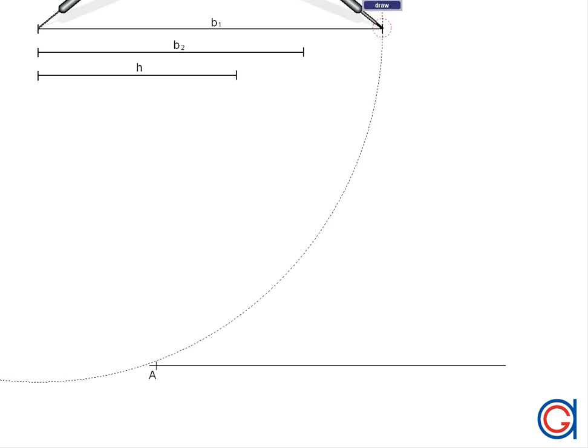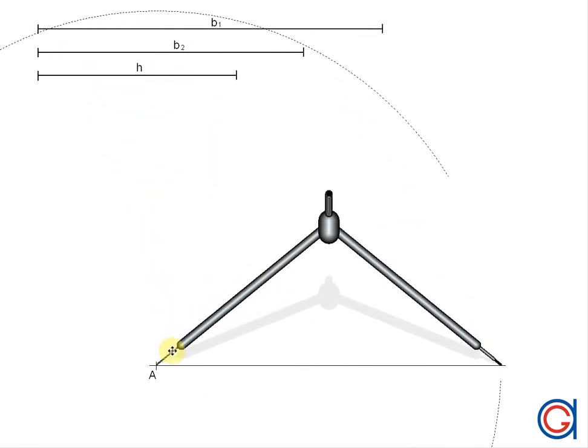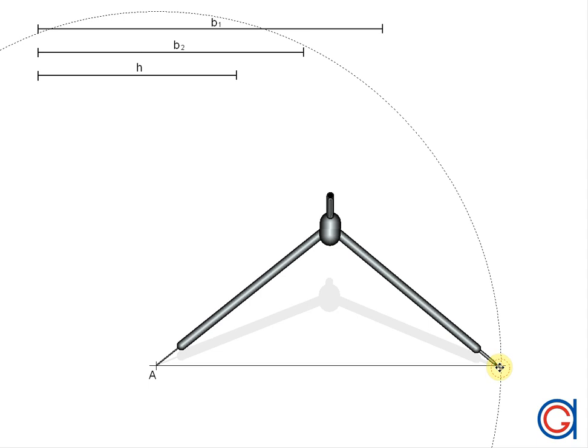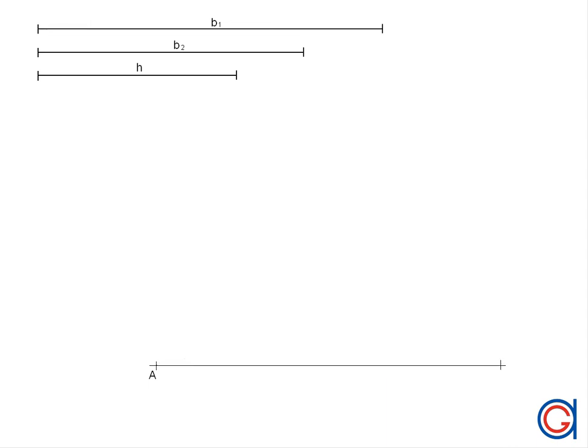The next step is we are going to transport the longer base of our trapezoid onto this line. Setting our compass on A, we scribe an arc to the left to obtain the second vertex of our trapezoid, which we will call B.